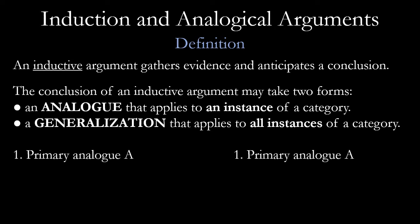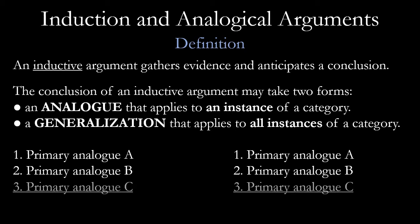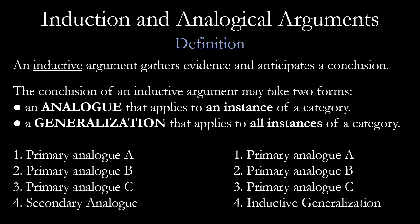So we might take a primary analog A — some set of reasons A, B, and C. These are different kinds of examples or pieces of evidence we might have towards an argument. Our conclusion would then be either some sort of secondary analog or some sort of inductive generalization that we might make based on the evidence.